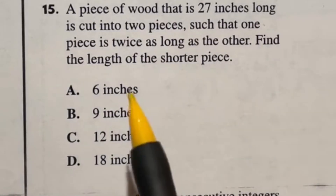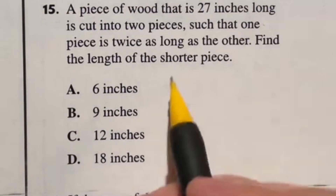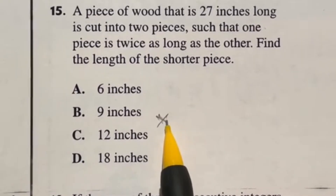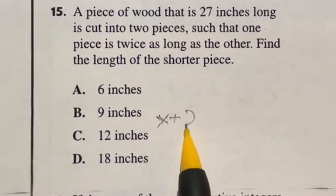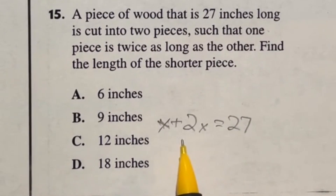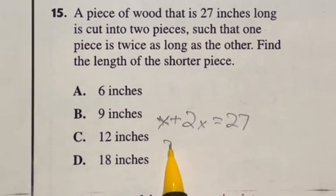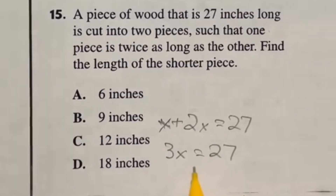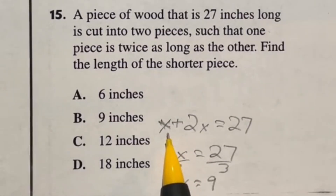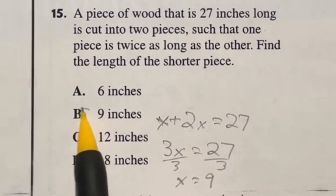A piece of wood that is 27 inches long is cut into two pieces such that one piece is twice as long as the other. Find the length of the shorter piece. We have one piece of length x and another piece twice as large, so 2x. Together they equal 27: x plus 2x equals 27, which gives us 3x equals 27. Divide both sides by 3 and x equals 9. Since x was the shorter piece, the shorter piece is 9 inches. Final answer is B.